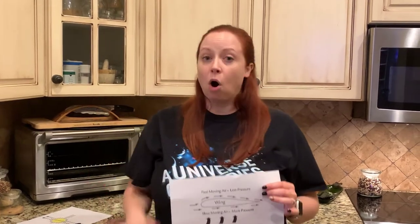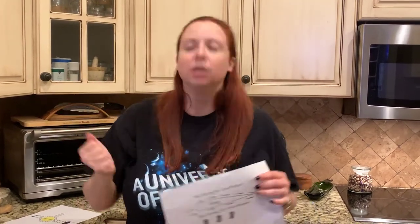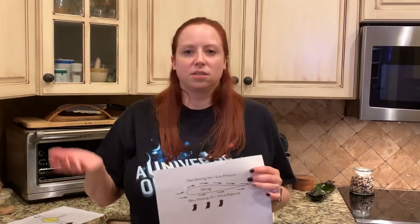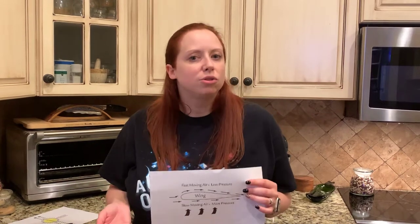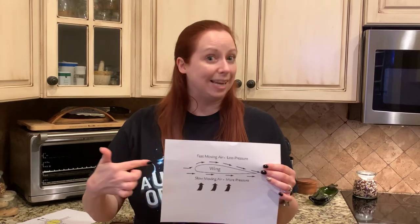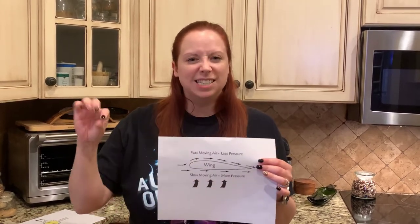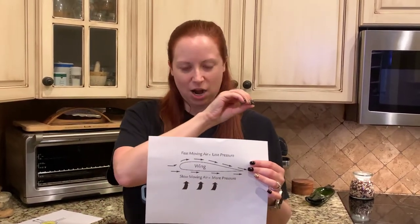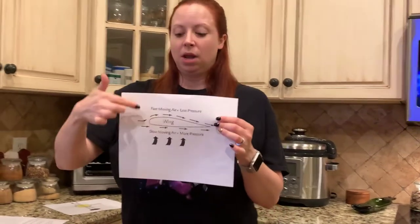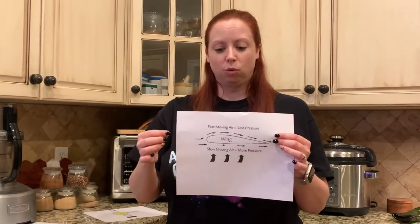All around you, all the time, air is putting pressure on your body — it's called air pressure. Because air is always putting pressure on your body, you don't notice it because it's always there; your body's just used to it. Since there's always pressure in the air around you, what a wing does is it divides the air and causes some of the air to flow over the top and some to flow underneath the wing.